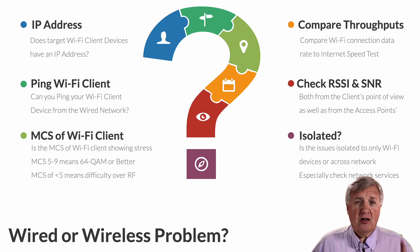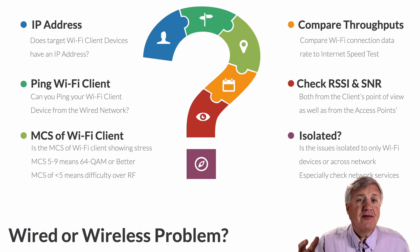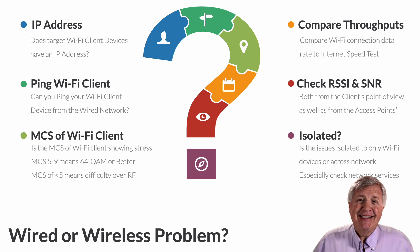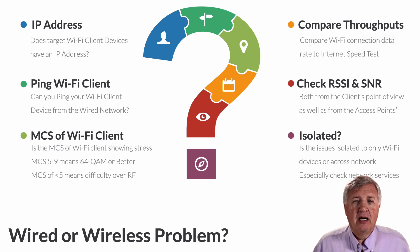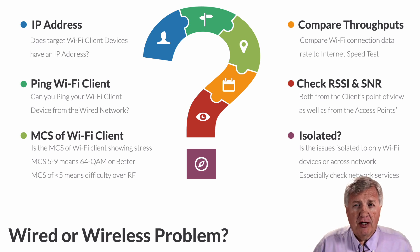If you have a Mac, just hold down the option key and click the Wi-Fi icon and you can find out what your MCS is. I recommend using a tool called Wi-Fi Signal from Adrian Granados, which does the same thing and can even plot MCS over time on your screen. For a Windows machine it's a little tougher — Windows clients don't expose MCS up the protocol stack, but they do give you a data rate. So you can take an MCS chart, look at the data rate, and kind of reverse engineer it.